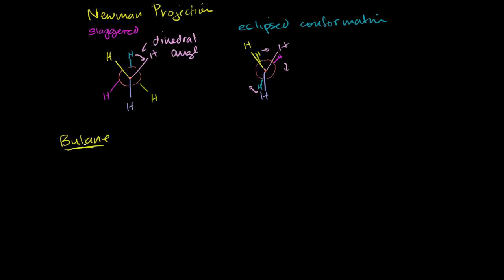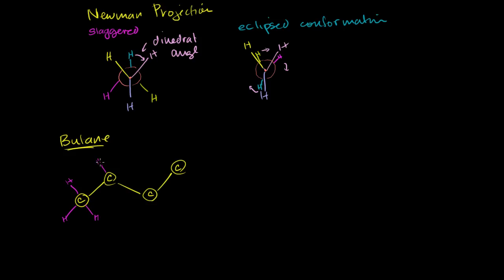Butane has four carbons. If I were to draw it as a ball-and-stick model, it would look something like this. So this would be carbon one, then carbon two, then carbon three, then carbon four. And then the hydrogens: carbon one would have three hydrogens coming out like a CH3. The middle carbons each have two hydrogens sticking out, and carbon four also has three hydrogens — it's also a CH3.